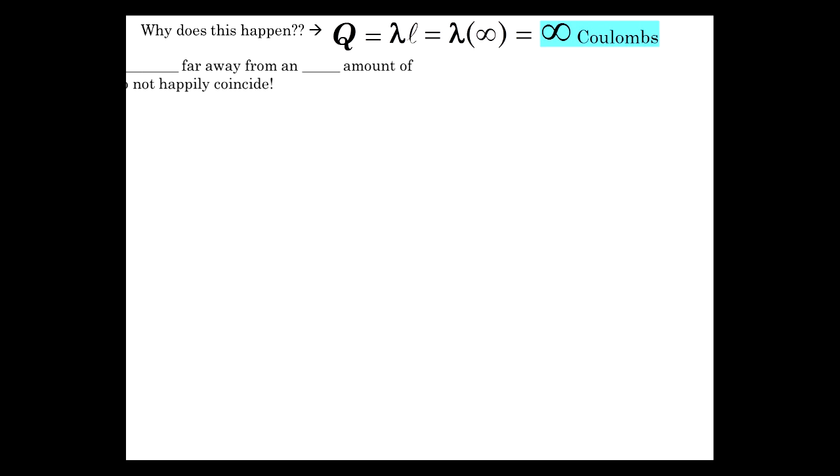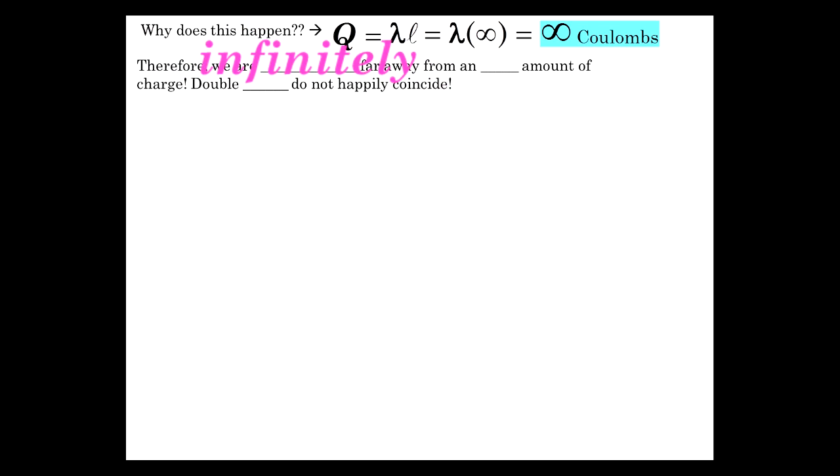So why does that infinity pop up? Let's check it out without getting too intricate with it. Consider what Q is here. Q is lambda L, but what's L? L is infinity for an infinite line of charge. So some finite linear charge density times infinity, infinity coulombs. So we're infinitely far away, that's the R(b) equal to infinity, from an infinite amount of charge. And double infinities do not like each other, and they cause mathematical results to sometimes spew out nonsense, which tends to happen when we try and merge quantum mechanics and general relativity to understand the true nature of a singularity. But that's another story.